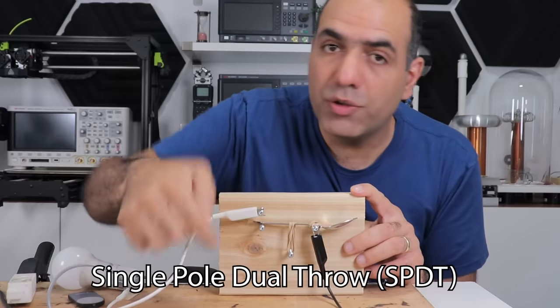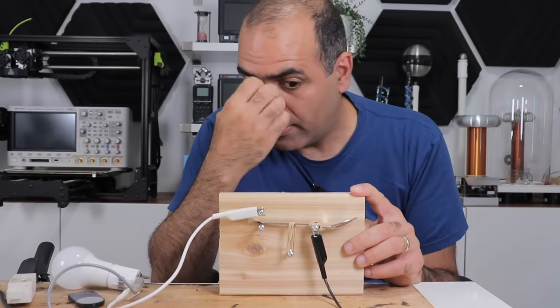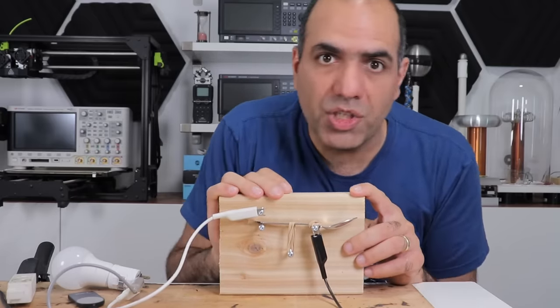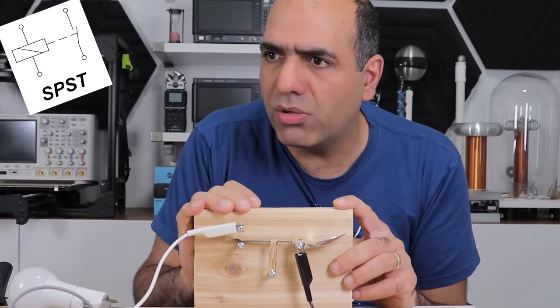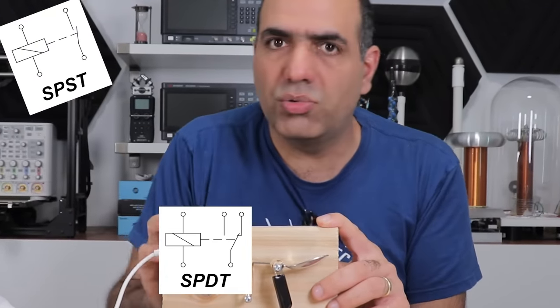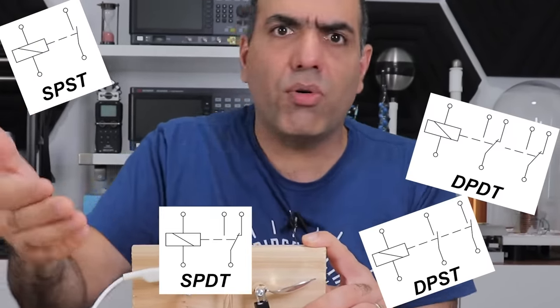This is a single pole because it has one common terminal, dual throw switch because it can throw that one common over to two different terminals. There can be other types of switches like single pole single throw, single pole dual throw, dual pole single throw, dual pole dual throw.